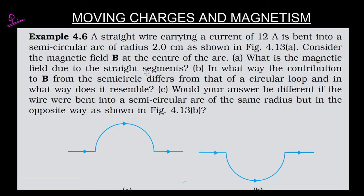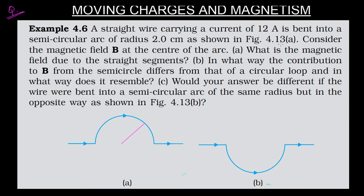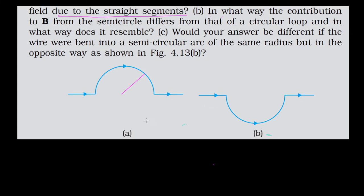We are given this question: a straight wire carrying a current of 12 amperes is bent into a semicircle of radius 2 centimeters. We are supposed to find out the magnetic field due to the straight segments.